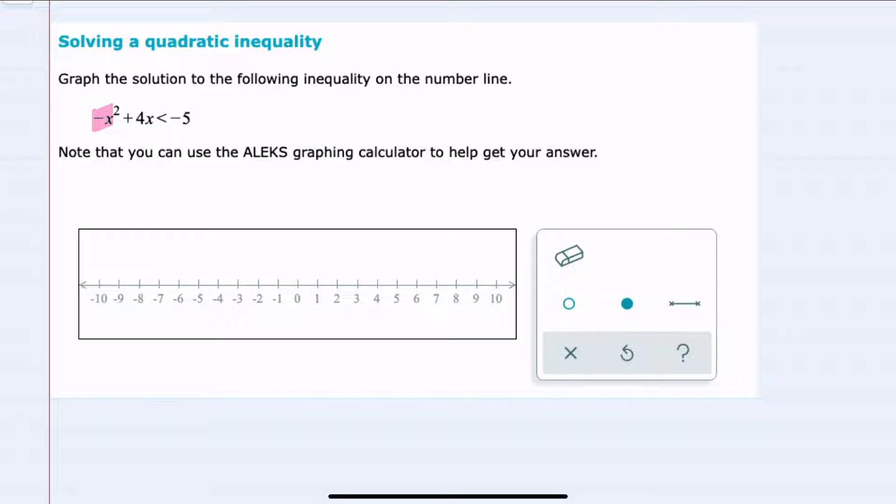Since this negative x squared is our leading term and it's currently negative, I'm gonna move everything from the left hand side over to the right hand side to make it positive. I would add the x squared to both sides, I would subtract 4x from both sides.